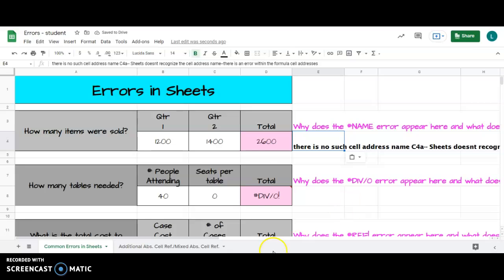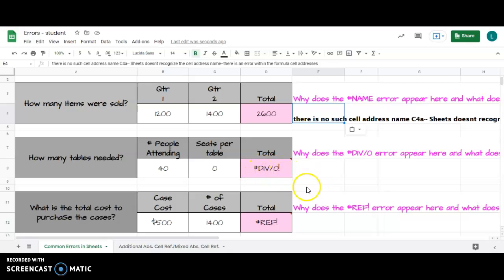Moving down to the second one where it says DIV/0. Think about math class—you can't divide by zero. If I take a look at this, 40 divided by zero. The formula is correct. I want to take this number and divide by this number, but because this number is a zero, it's telling me DIV/0.